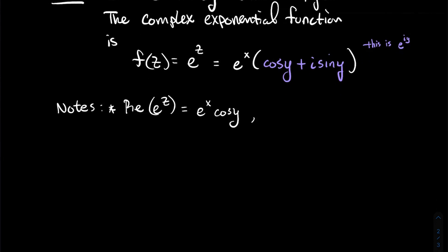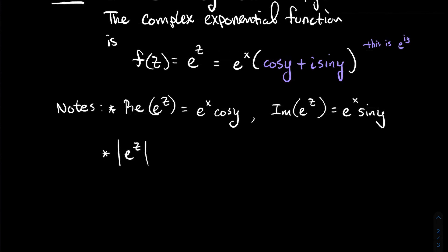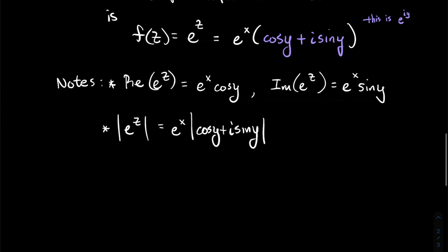The real part of e^z — distributing e^x through — is e^x cos y, and the imaginary part is e^x sin y. For the modulus, |e^z| = e^x · |cos y + i sin y|. But cos y + i sin y lies on the unit circle, so its modulus is 1. Therefore, the modulus of e^z is simply e^x, the real part of z.